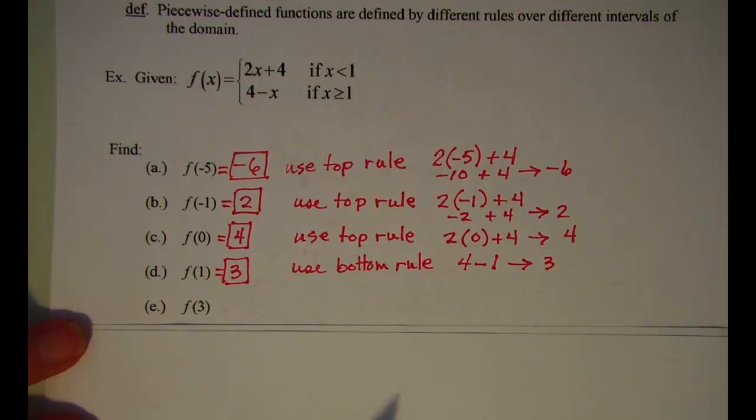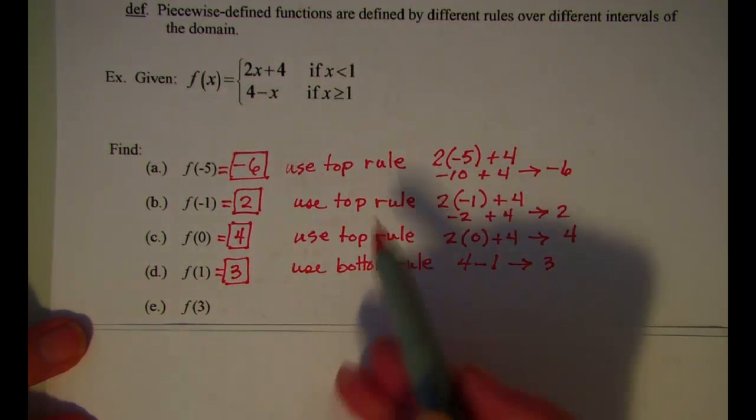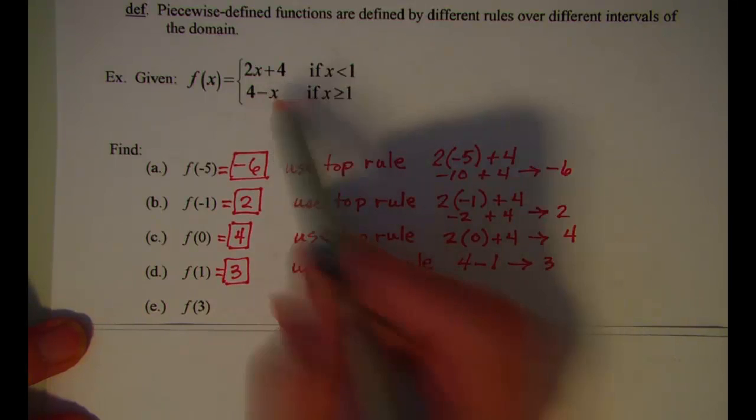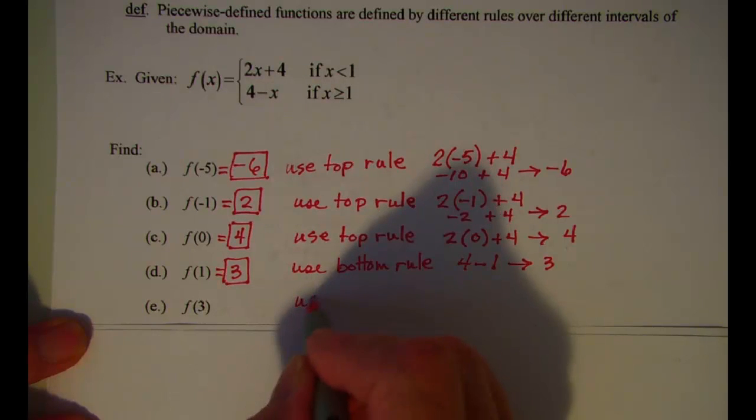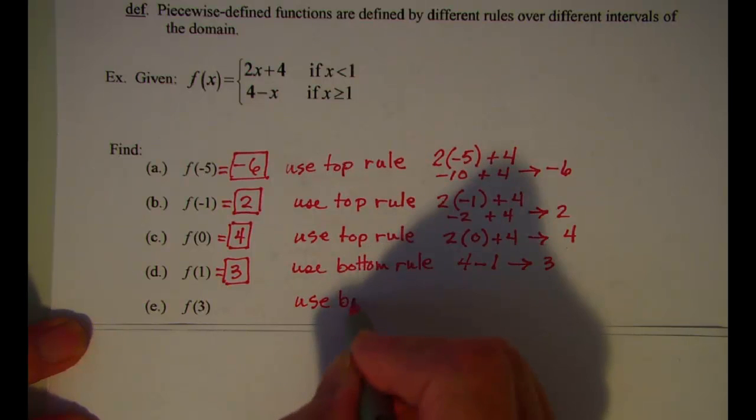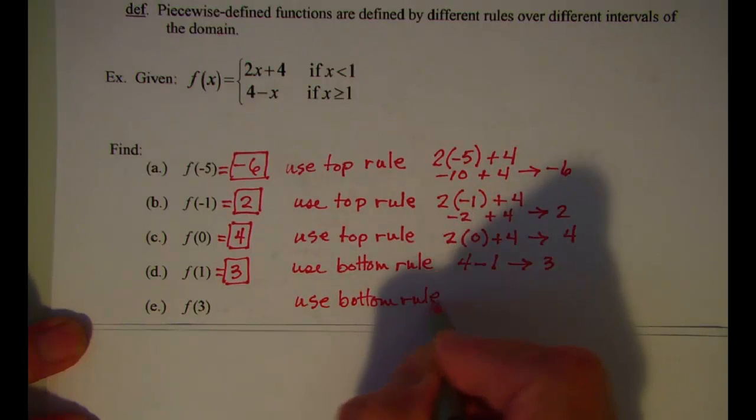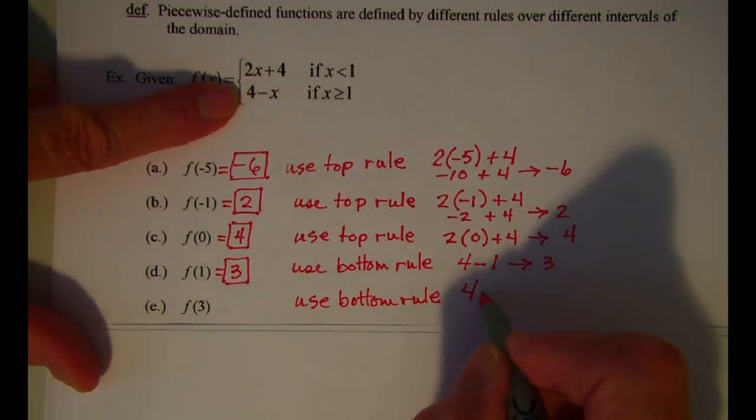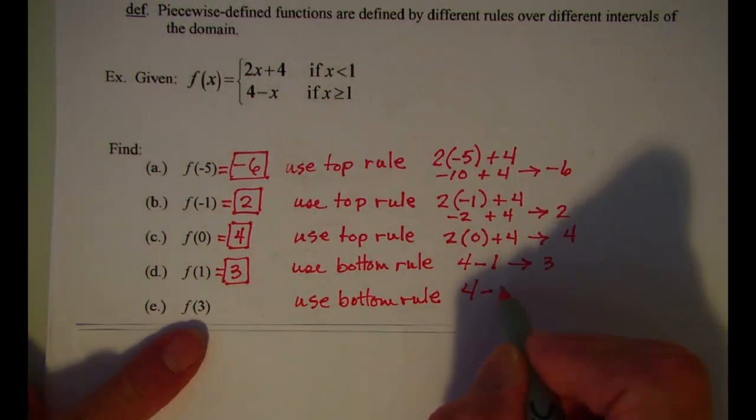To evaluate f of 3, since 3 is greater than 1, I'll be using the bottom rule. And that says 4 subtract x, and my x is 3.